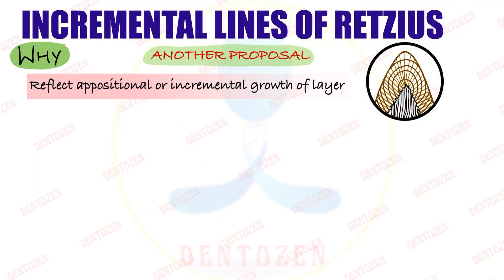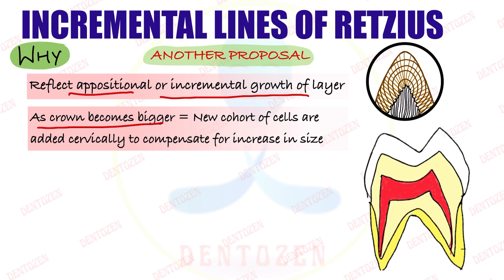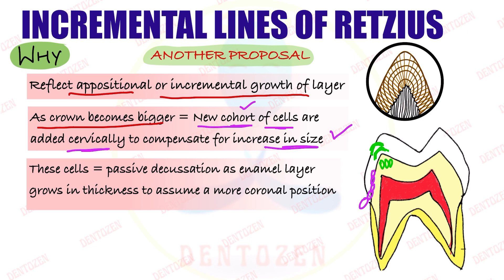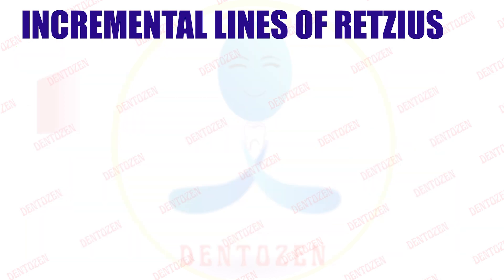Another proposal is that these lines reflect the appositional or incremental growth of enamel. As the crown grows and enamel layers increase in size, new cohorts of cells are added cervically to compensate for growth. These cells decussate — cross over — moving coronally toward the cuspal region and laying down another layer of enamel. The layer formed by one group of cells differs from that formed by the next cohort, and the demarcation between these cohorts may appear as an incremental line.